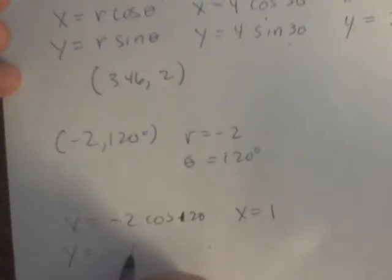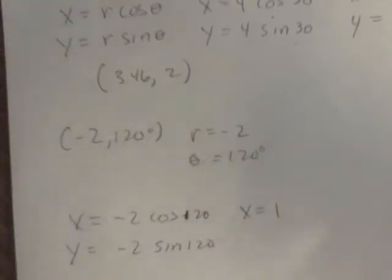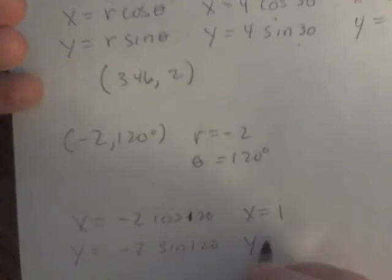y equals negative 2 sine 120, which equals negative 1.73.